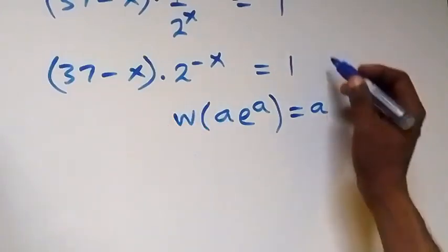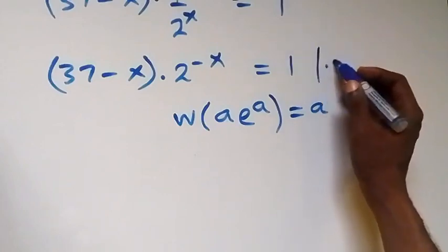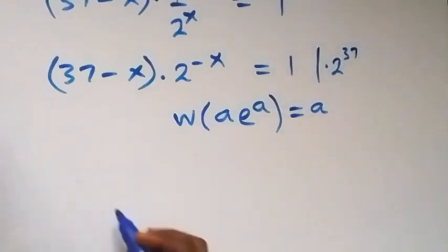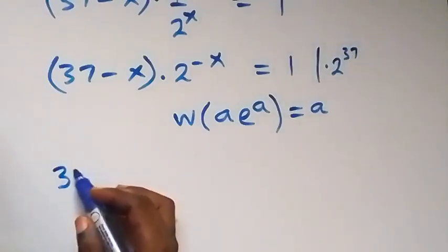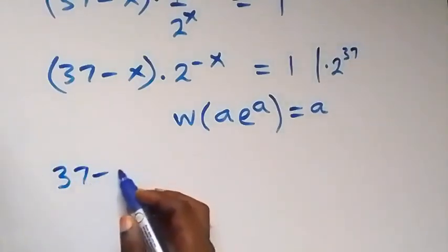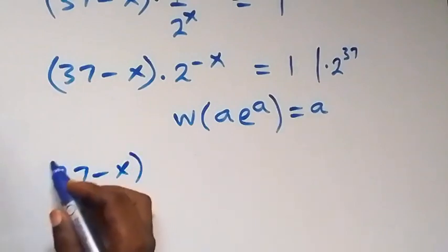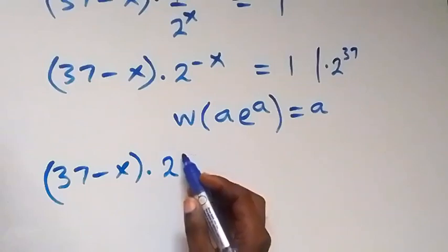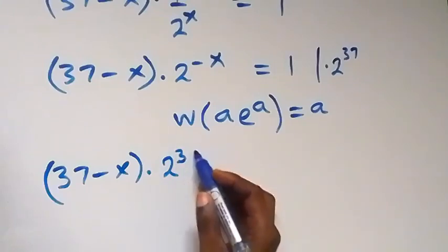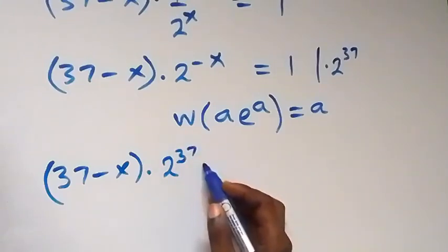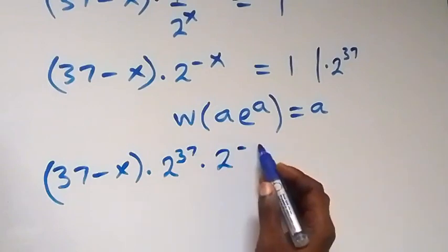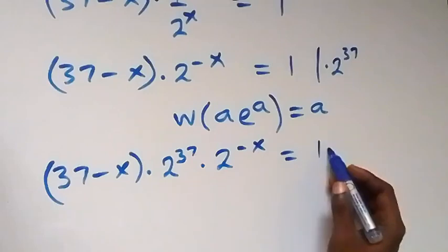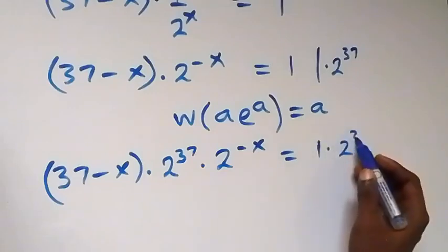We multiply through by 2 raised to power 37. This becomes 37 minus x, multiplied by 2 raised to power 37, times 2 raised to power minus x, now equals 1 times 2 raised to power 37.